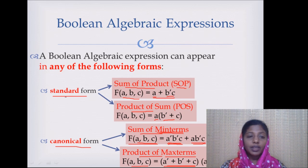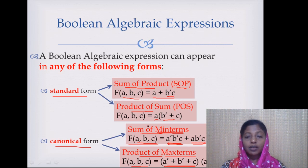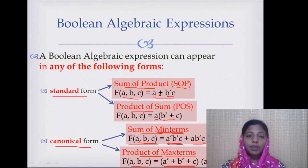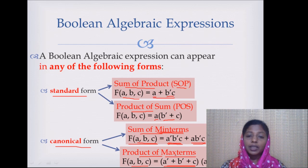The difference between standard notation and canonical form is that in standard form — whether sum of products or product of sums — the number of literals in each sub-expression varies. Whereas in canonical form, the number of literals in each minterm or maxterm is always the same as the number of input variables.